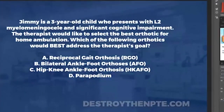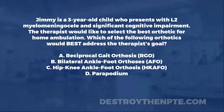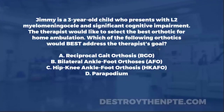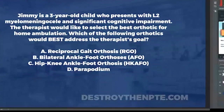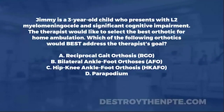For this challenge Wednesday, we're going to go through our patient Jimmy. Jimmy is a three-year-old child who presents with L2 myelomeningocele and significant cognitive impairment. The therapist would like to select the best orthotic for home ambulation. The answer choices are: A) reciprocal gait orthosis, B) bilateral ankle foot orthoses, C) hip knee ankle foot orthosis, and D) the parapodium.